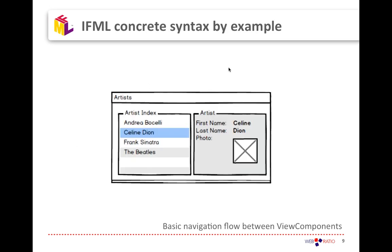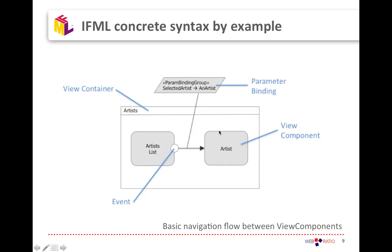Starting from a very simple example: if we want to describe a list of elements where you click and get the detail, the IFML model has the list component, an event for the user's click on one element, and a component describing the detail of the selected element. The navigation flow describes the user moving from the list to the visualization of the specific artist, and the selected artist is transferred as an input parameter to the target component.